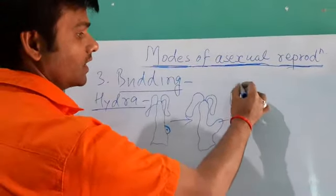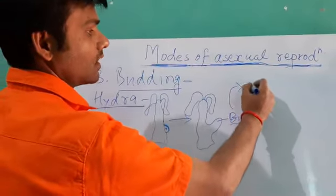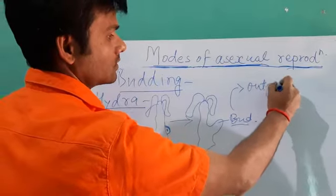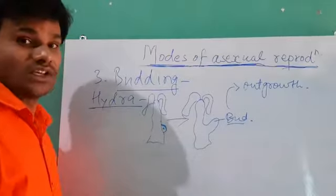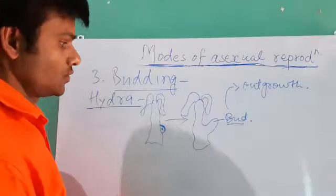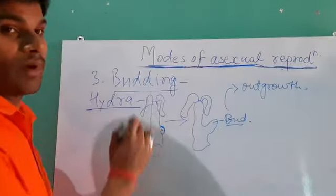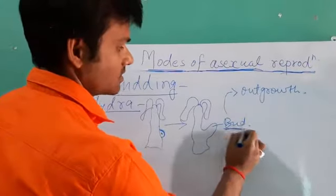The question is what is a bud? A bud is an outgrowth. This is a new individual which appears on the parent body. This is known as a bud.